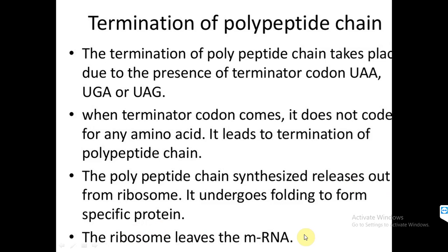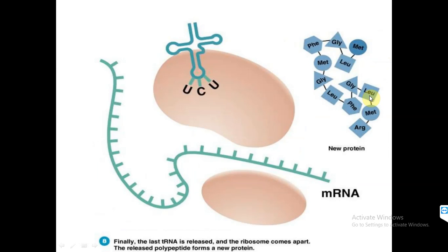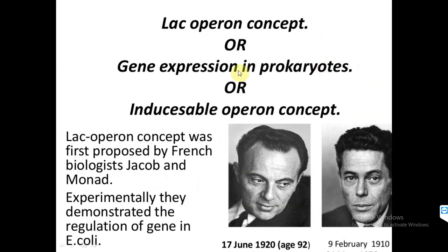After the polypeptide chain is released from the ribosome, the ribosome also leaves the messenger RNA. The mRNA strand is then vacant and can be used again for the formation of another protein. The polypeptide chain folds to form a new functional protein composed of different amino acids.